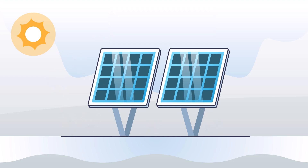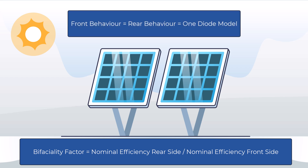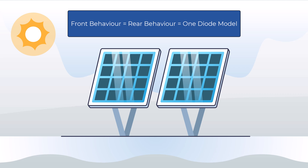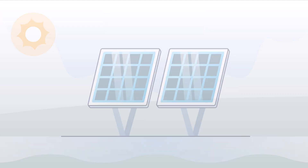In PVSYST, such bifacial modules will be characterized by their bifaciality factor. This is the ratio of the nominal efficiency of the rear side to the nominal efficiency of the front side. PVSYST considers that the behavior of the rear production is similar to the front, obeying the one diode model with the same parameters. The bifaciality factor is always less than one; manufacturers usually report values between 0.8 and 0.9, but it may be lower or higher for some technologies.